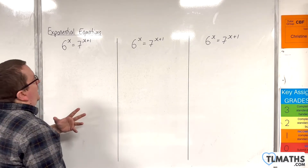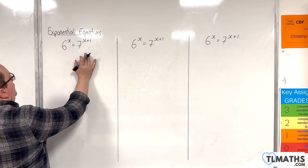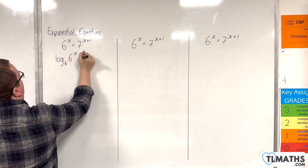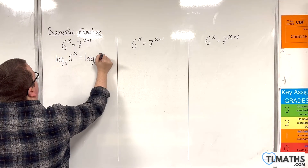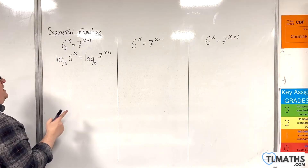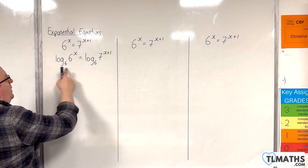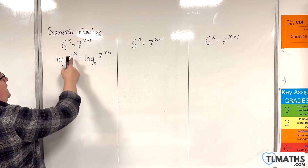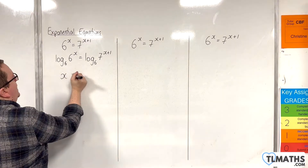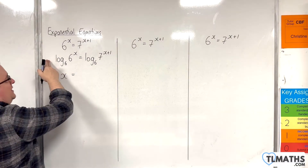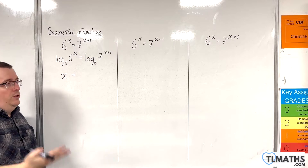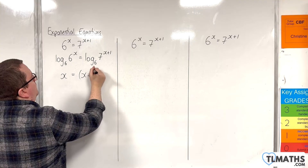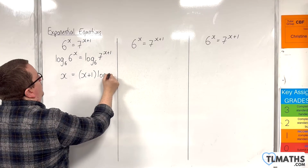Logging both sides is your method. Using base 6, if I take the logarithm of base 6 of both sides, the left-hand side is of the form log base b of b to the x, so this is just x. You can alternatively think about bringing the x down to the front and then log base 6 of 6 is 1. On the right-hand side, x plus 1 comes to the front — make sure it's in a bracket — and we have log base 6 of 7.